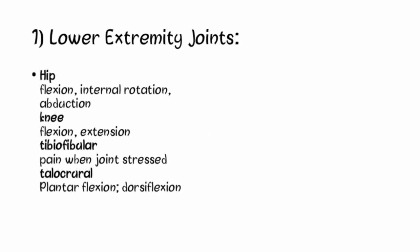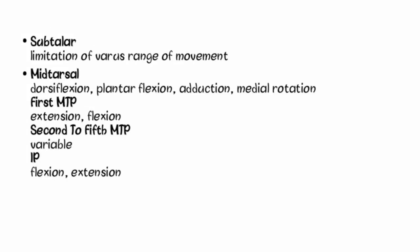Now let's look at capsular patterns of various joints, starting from the lower extremity. At the hip joint, flexion is more limited than internal rotation, which is more limited than abduction. At the knee joint, flexion is more limited than extension. At the tibiofibular joint, there is pain when the joint is stressed. At the talocrural joint (ankle), plantar flexion is more limited than dorsiflexion.